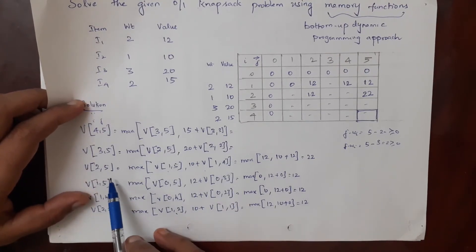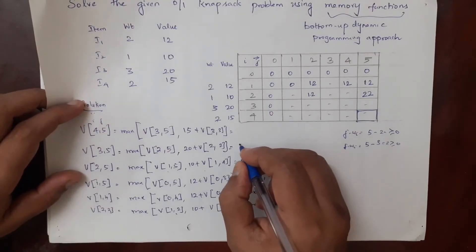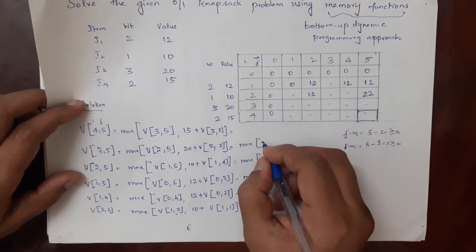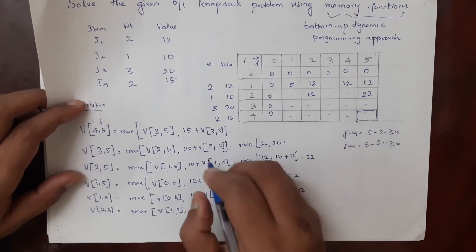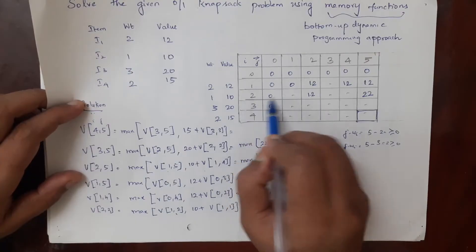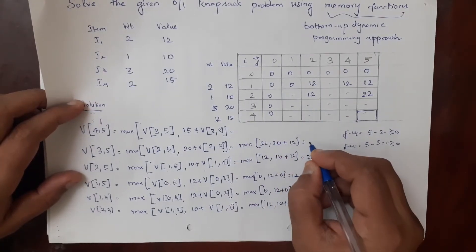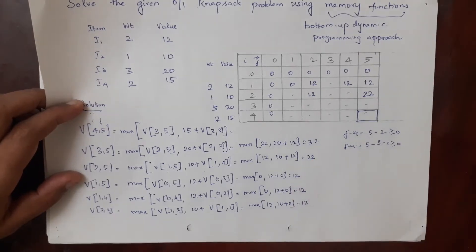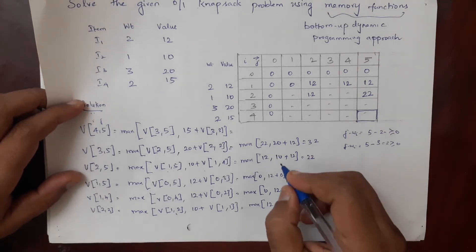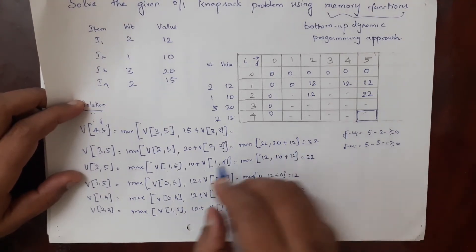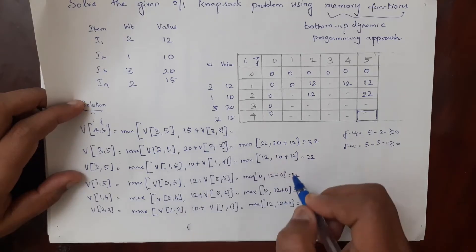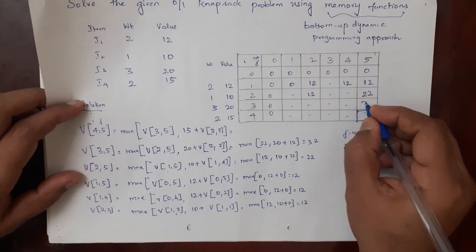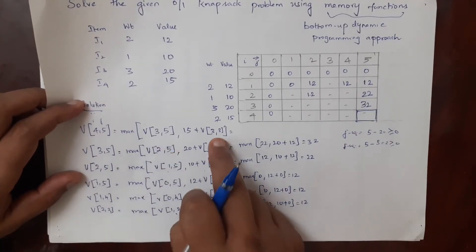Now we have both v(2,5) = 22 and v(2,2) = 12. So v(3,5) = maximum of v(2,5) = 22, or value of the third item (20) plus v(2,2) = 12, giving maximum of 22 or 32. Therefore v(3,5) = 32, and we put 32 in cell 3 comma 5.